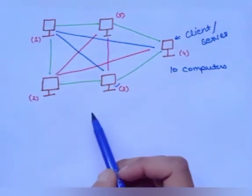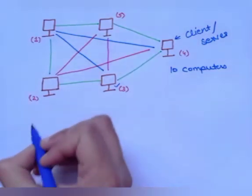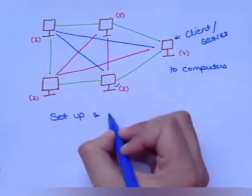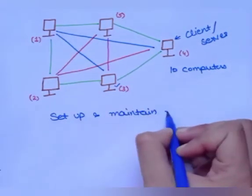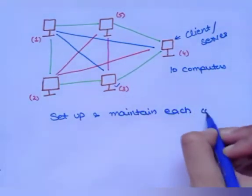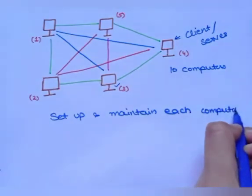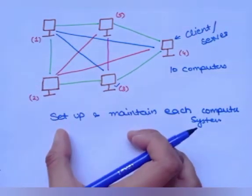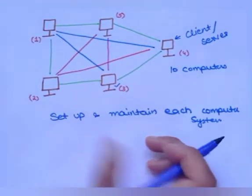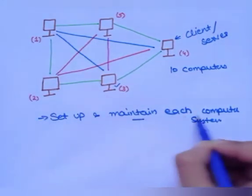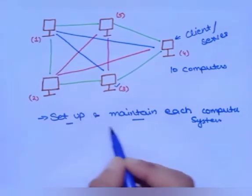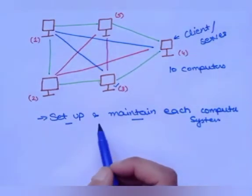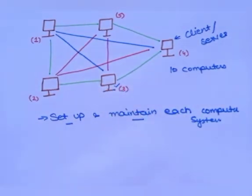A benefit of peer-to-peer network is that it becomes very easy to set up and maintain each computer system, because there are a limited number of systems available. This type of network architecture is also less costly, as it does not contain any dedicated server.